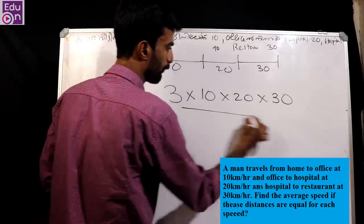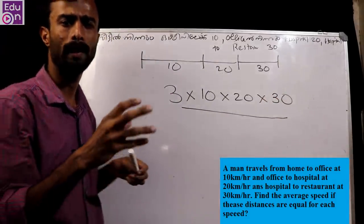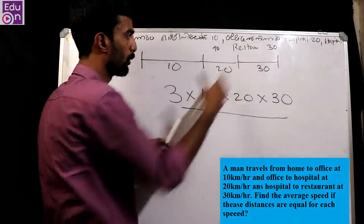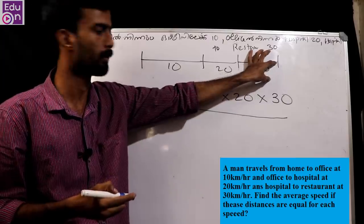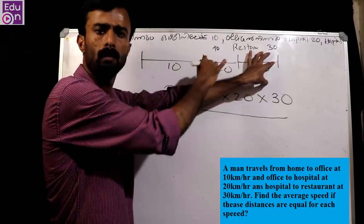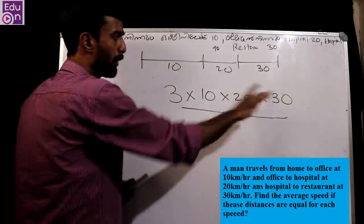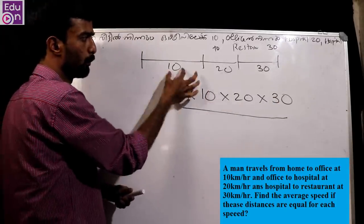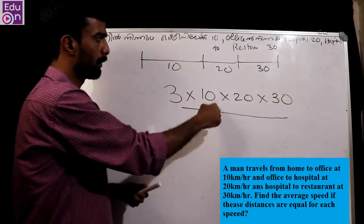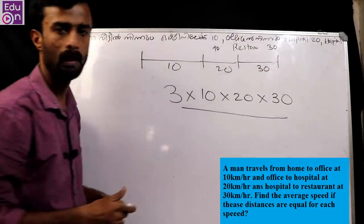Okay, by — we have 2 distances. We have to do this: 2 into 15, then we do 3 into — multiply — 10. Equal distance, then multiply.